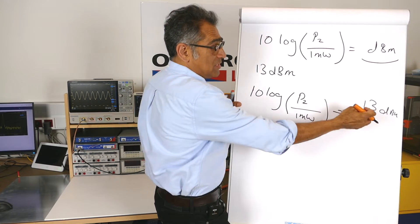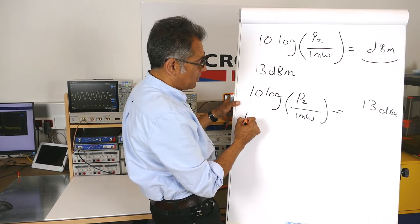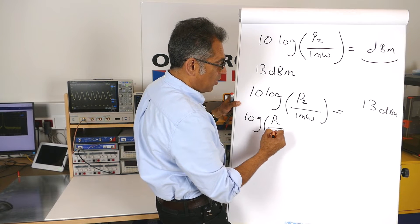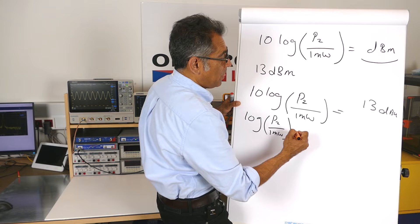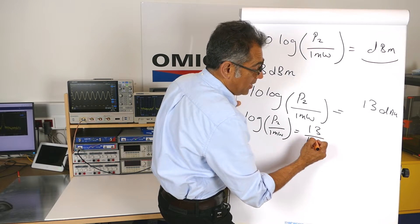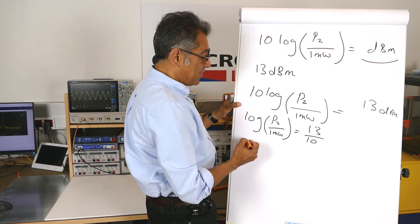So in order to convert this back into watts, all you have to do is divide that by 10, so you end up with log of P2 over 1 mW equals to 13 divided by 10, which is 1.3, and then you end up with